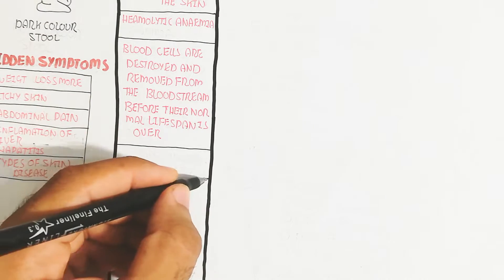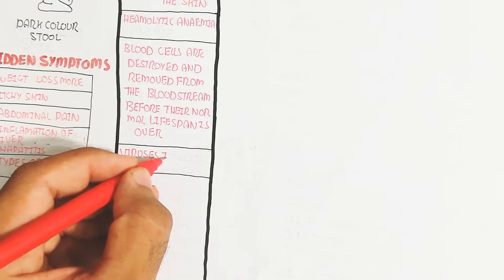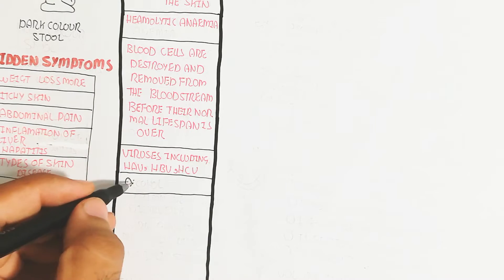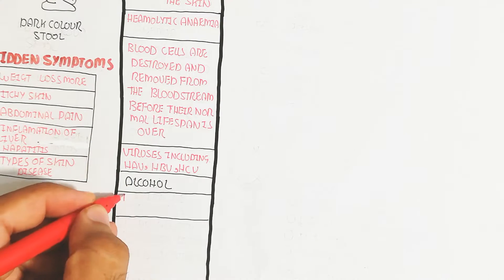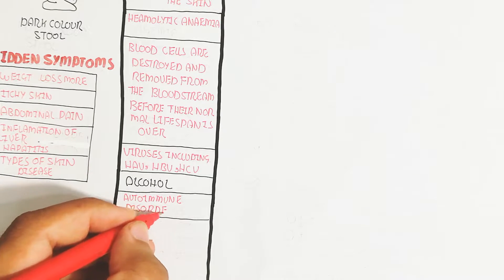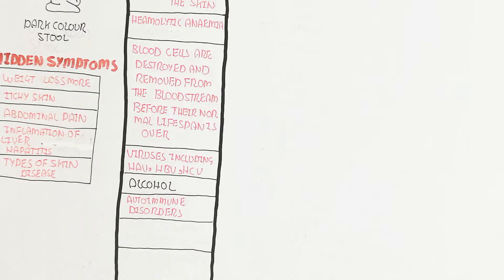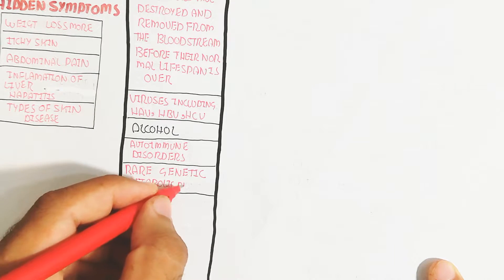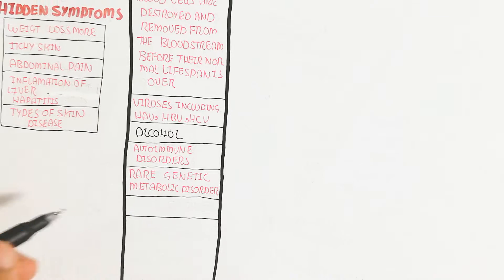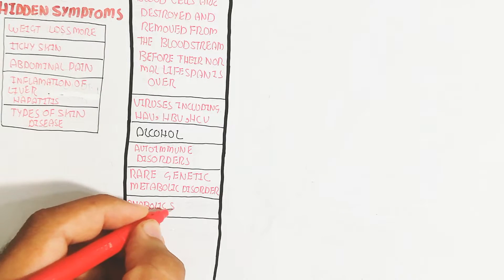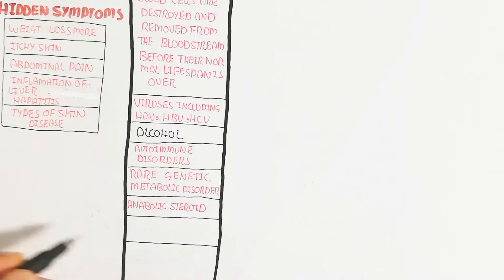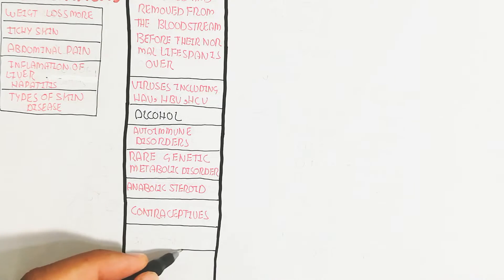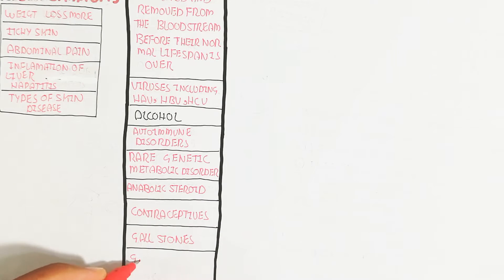Viruses including HAV, HBV, and HCV are also involved, as well as alcohol — because alcohol damages the liver, causing red blood cell problems. Autoimmune disorders affecting RBCs, rare genetic metabolic disorders, contraceptives, anabolic steroids, gallstones, and gallbladder cancer are additional causes of jaundice.